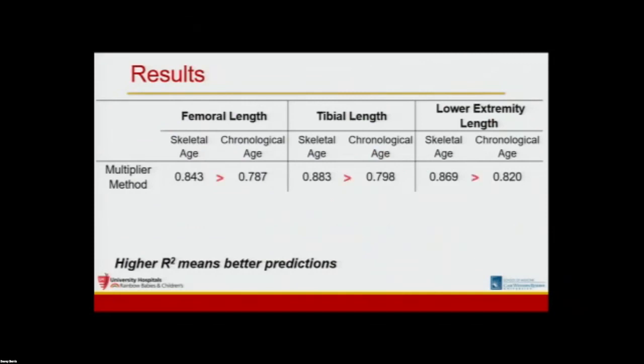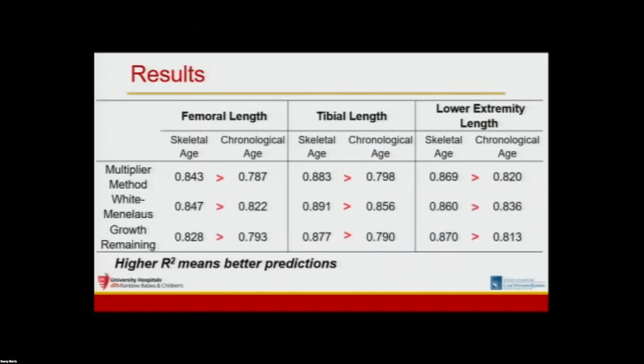R-squared values are presented with higher values indicating better predictions. In all cases, our skeletal age model outperformed the chronological age model, and this was also the case for the other two limb length prediction systems. Our femoral length predictions using skeletal age were on average two millimeters more accurate for femoral length, four millimeters more accurate for tibial length, and six millimeters more accurate for ultimate lower extremity length.